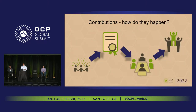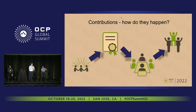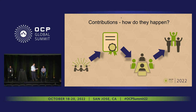However, today we're going to be focusing on just one of those. The contribution process — how do the contributions happen? They begin by being socialized within an OCP project group. Generally what happens is a contributor will have an idea, they'll approach a project lead or a group of project leads and say, hey, is this something that would be interesting? Is this relevant to this project? Does it fit what the project is trying to do? Does it fit within the charter? If that answer is yes, the project leads will encourage them to sign a contribution license agreement, otherwise known as a CLA.